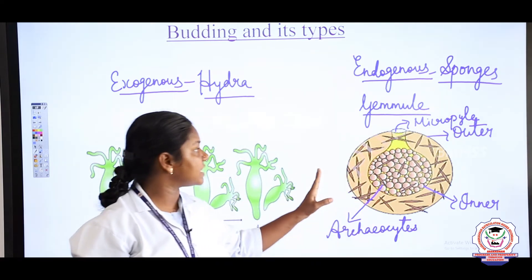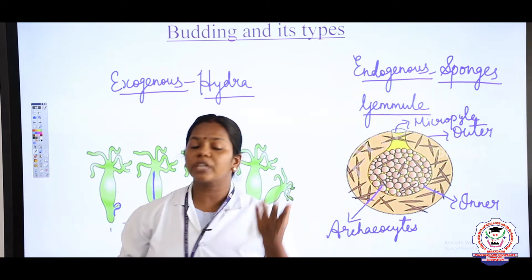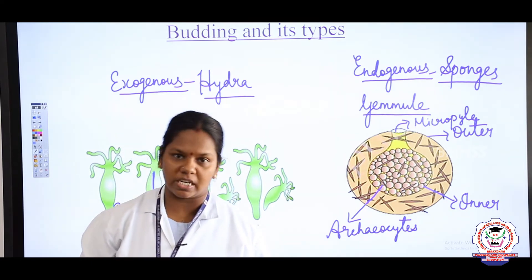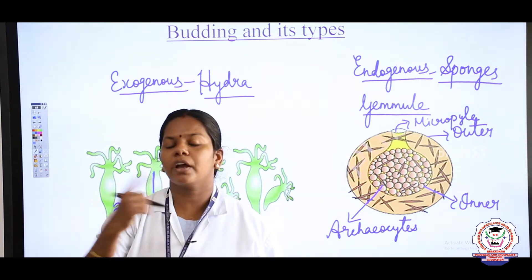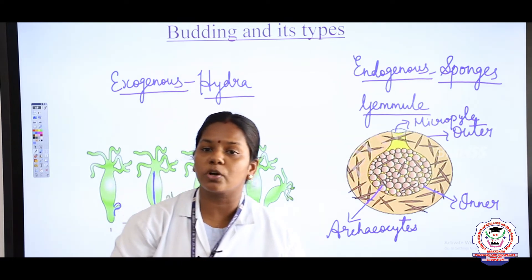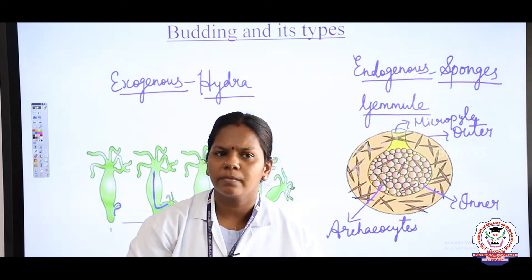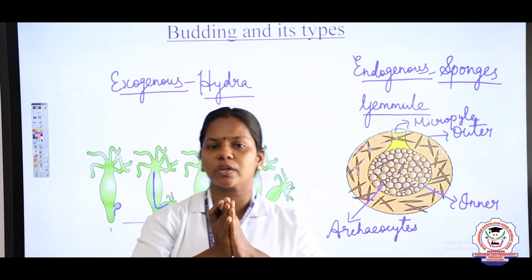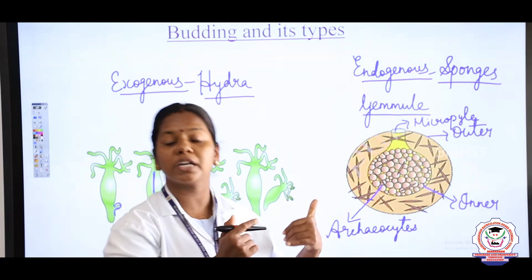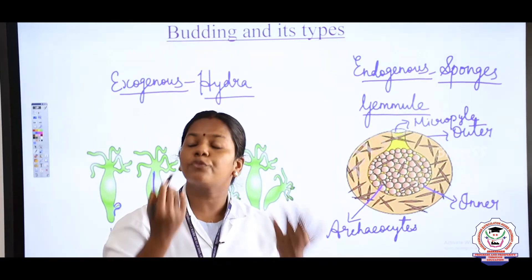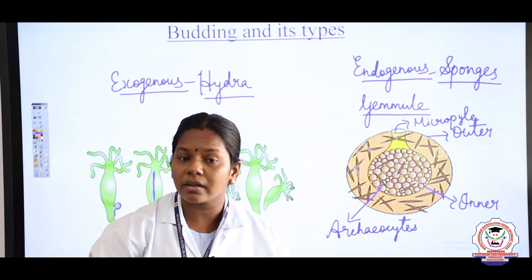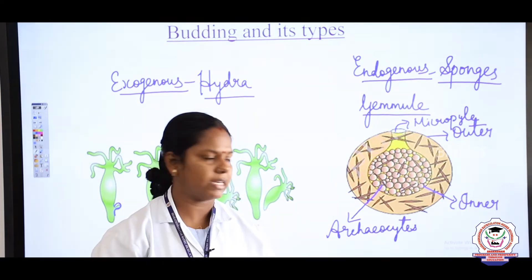The internal buds germinate and develop into individual sponges. So the two types of budding are exogenous and endogenous. The internal buds of sponges are called gemules, and the food-laden cells formed inside are called archaeocytes.